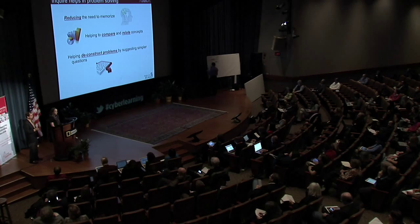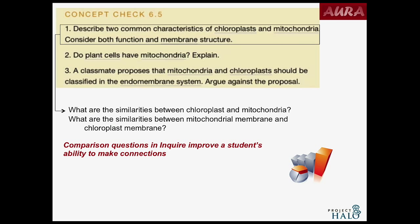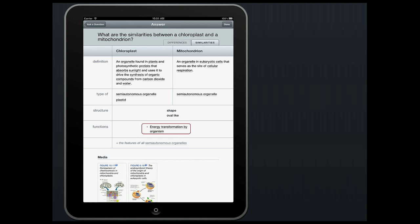Here are some examples — three questions straight from the Campbell Biology book. The first asks students to compare common characteristics of mitochondria and chloroplasts, specifically membrane structure and function. You could use Inquire to directly ask about the similarities between those two organelles, as you'll see on the next slide.